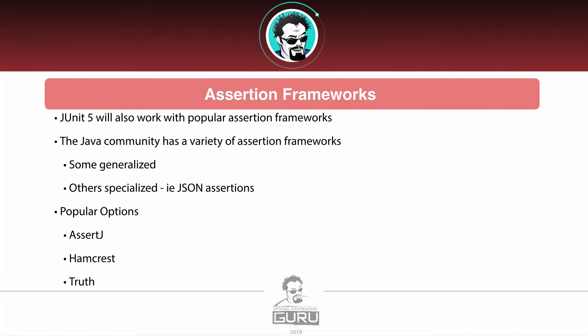JUnit 5 also works with all the popular assertion frameworks. Generally speaking, you just need to include a dependency for your desired framework. There are literally dozens of variants out there — some generalized, others specialized. For example, you can find assertion frameworks just for looking at JSON, with very capable frameworks for testing JSON payloads. Some popular options right now are AssertJ, Hamcrest, and Truth. I'm planning on doing a demonstration of AssertJ and Hamcrest because they are very popular and have nice syntax.